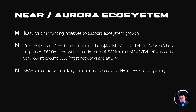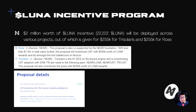So Aurora might be undervalued in a way, but because this is a layer 2 and not a full layer 1 like most networks, I'm not sure if the same valuation applies — there may be some discount given to Aurora, especially since it is not the gas token of the chain. Recently, a lunar incentive program has been passed, giving $2 million worth of incentives across multiple ecosystems, of which $250,000 goes to Trisolaris and $250,000 goes to ROSE. So if you are looking to farm some LUNA, you might want to bridge funds over into ROSE and Trisolaris.